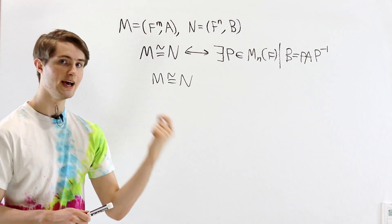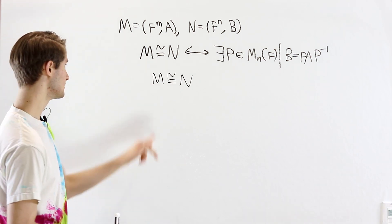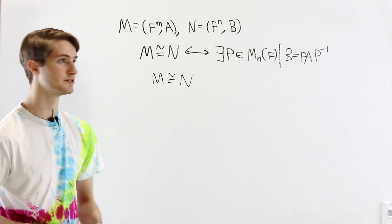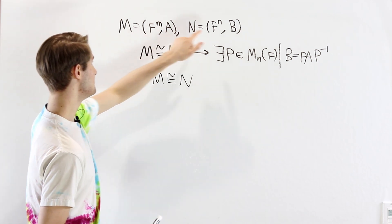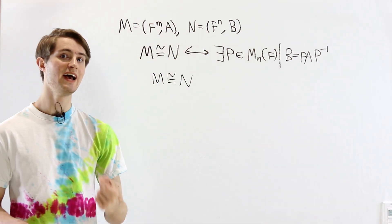Remember that every F[x]-module is also a module over a field. In other words, these two are vector spaces. They're given by F to the m and F to the n.